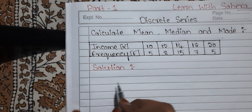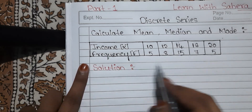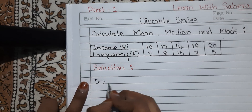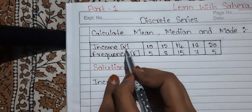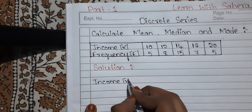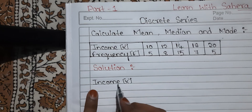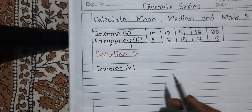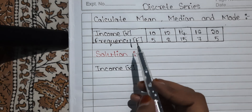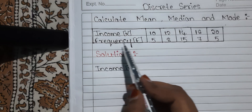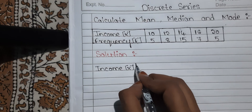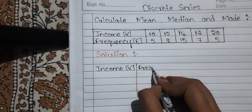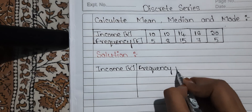To calculate mean, first we have to take income and frequencies, whatever they have given in the question — that only you have to put in your answer also. The first column is income, denoted as X. If they don't give X in the question, you should assume income as X. If they give X and F, that is fine. If they don't, assume income as X and the other one as F. Draw a box, then the second column is frequency, denoted as F.